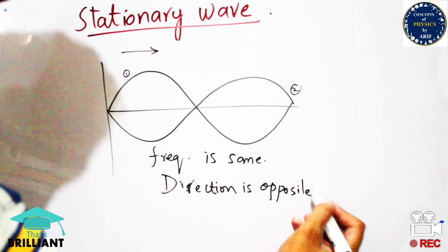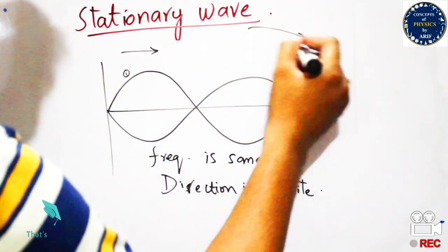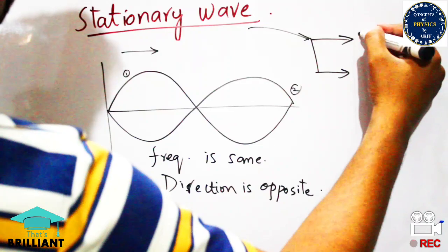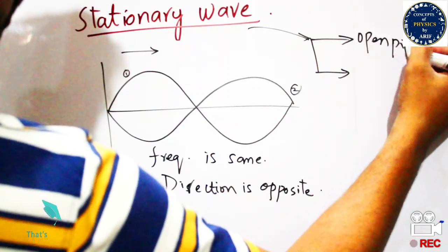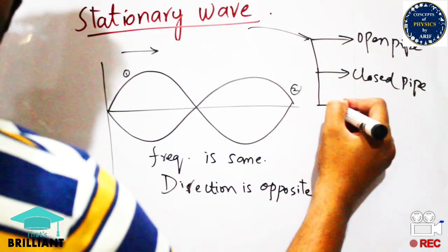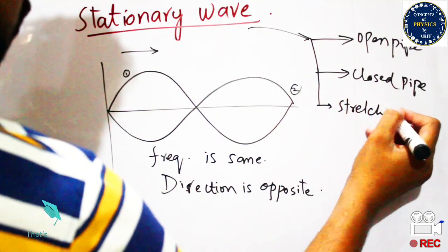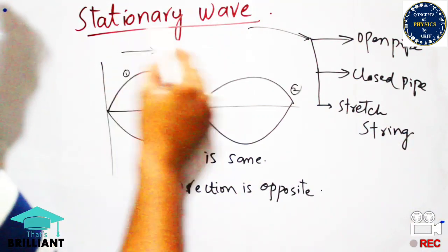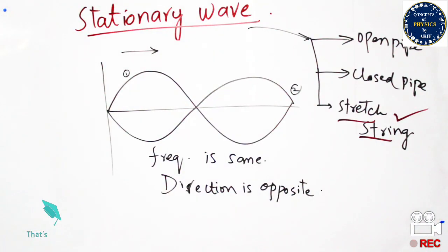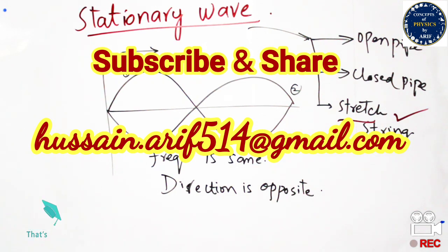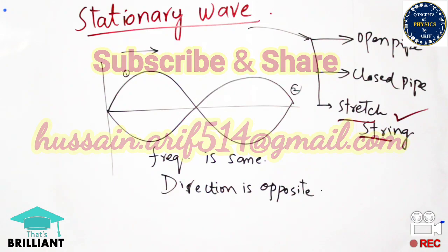These are three basic definitions extracted from the principle of superposition: interference, stationary waves, and beats. There are also three different methodologies of the stationary wave: stationary wave in an open pipe, stationary wave in a closed pipe, and stationary wave in a stretched string. In the next topic we will discuss stationary waves in a stretched string. Up till now we have finished the principle of superposition. If you have any questions, you can contact me at my email address given below or in the comment box. Thank you so much, bye bye.